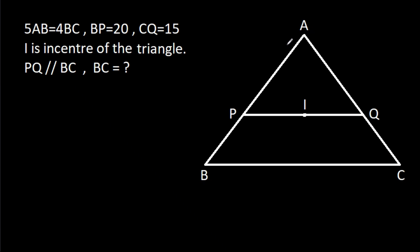In this video, we have been given that 5AB is equal to 4BC, BP is 20, CQ is 15, I is the incenter of the triangle, and PQ is parallel to BC. We have to find BC.